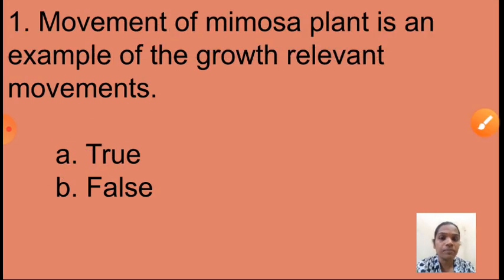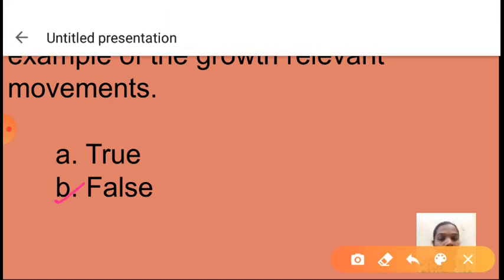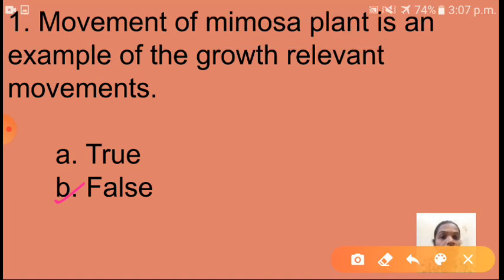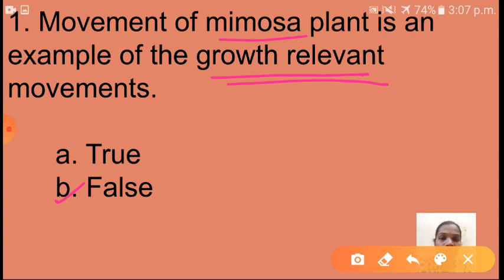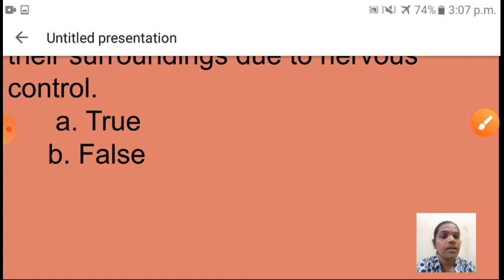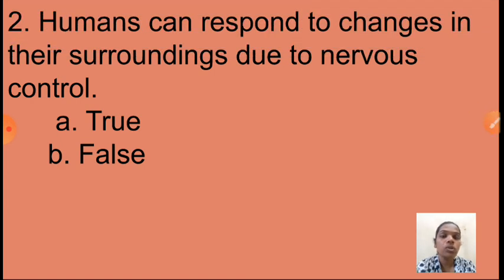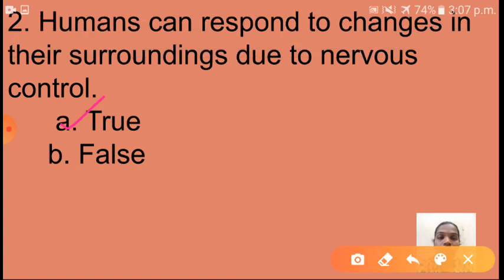True or false: movement of the mimosa plant is an example of growth-relevant movement. The answer is false, because the movement of the mimosa plant is a growth-irrelevant movement. Next true or false: humans can respond to changes in their surroundings due to nervous control. This is a correct statement, so the answer is true.